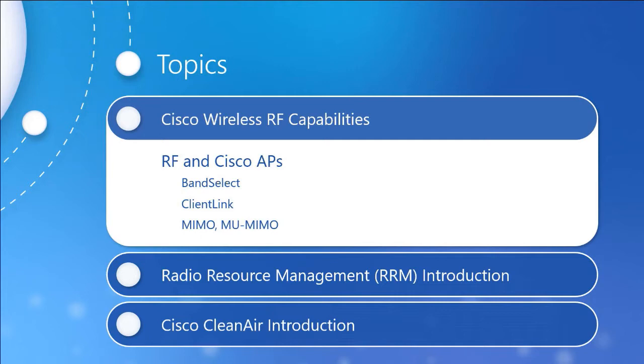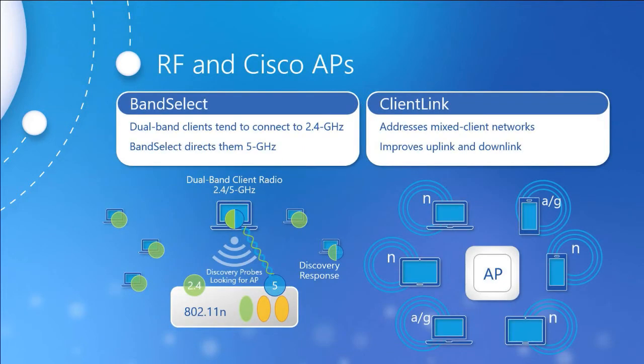We'll also introduce some new things like radio resource management (RRM) and Cisco Clean Air. When we talk about radio frequency and Cisco access points, these are the bells and whistles that Cisco offers us. The first one is a product known as band select.